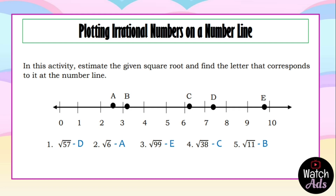For the square root of 99: it should obviously be close to 10 because it is very close to 100, and the square root of 100 is 10. The answer is letter E, and that is correct. For the square root of 38: it lies between 6 and 7 because 6 squared is 36 and 7 squared is 49, but it is closer to 36. Our answer letter C is correct.